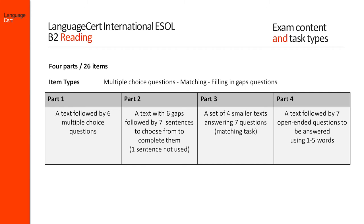Part 4 assesses the candidate's ability to locate and obtain specific information through detailed reading and answering seven open-ended questions. Responses should be no longer than five words each time. All answers will need to be written on a separate answer sheet.